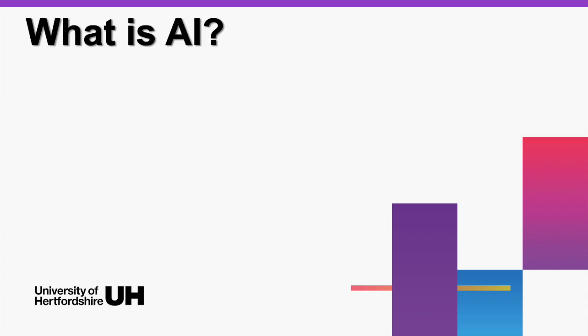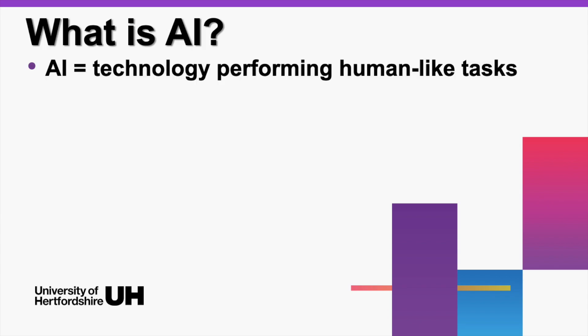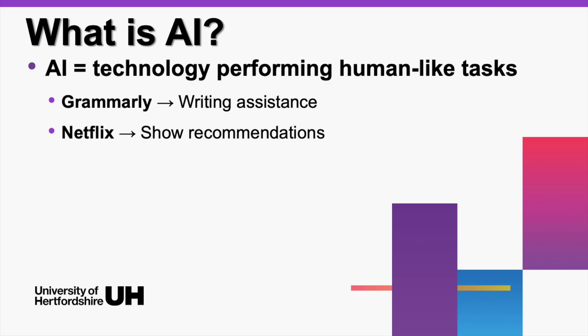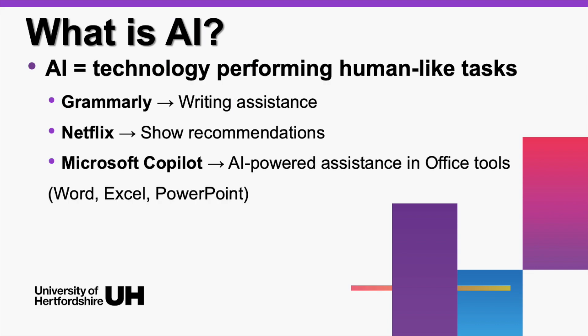So what exactly is AI? Simply put, it's tech that thinks, or at least tries to. You've probably used AI already without even realizing it. Grammarly checking your emails? AI. Netflix recommending that crime documentary you definitely weren't planning to binge? AI. Microsoft Copilot helping you format your assignments at 3am? Also AI.